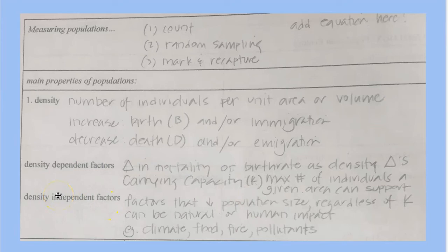And then there's also density independent factors that have nothing to do with how dense a population is. These are things that are going to reduce population size regardless of the value of K. And they can be natural environmental factors or human. Things like the climate, things like flood or fire, pollutants in the environment.